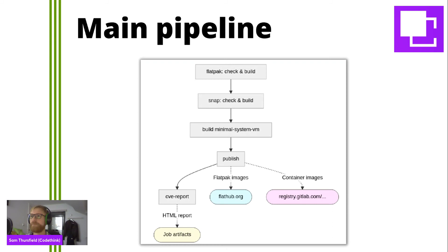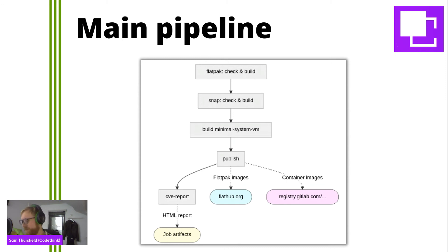When it comes time to make a release, a very similar pipeline runs, but the publish step will go to a different tag. So when there's a commit on a stable branch, it'll be published to the stable tag. In this case it will actually go out to users, and hopefully they see that whatever bug they had is fixed.